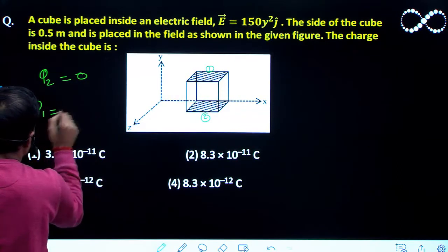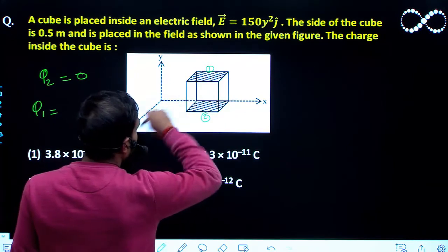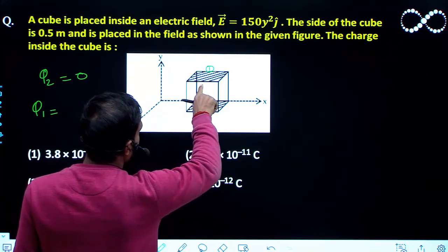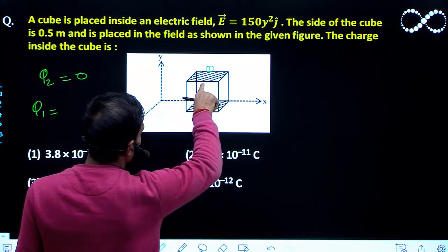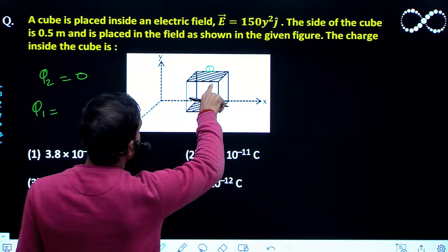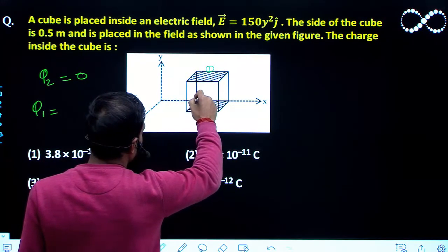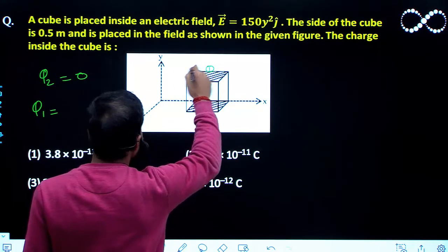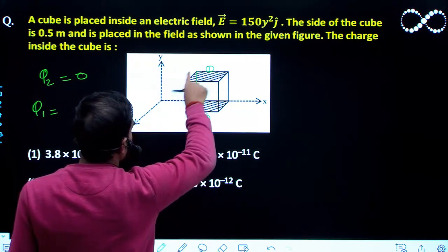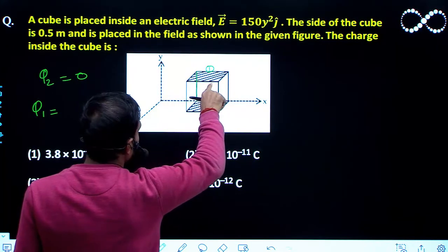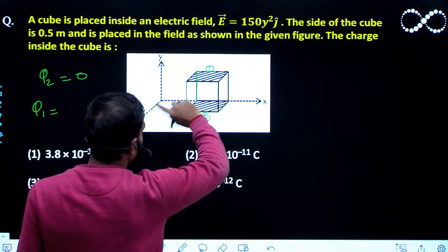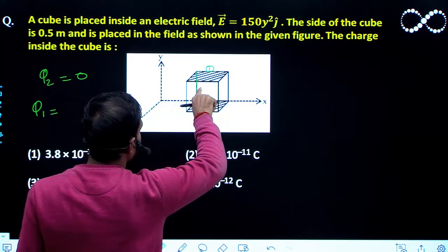Now I talk about flux surface 1. Due to the flux, if you will see here, all the points of the surface 1 are having the y coordinate as 0.5 because this side of the cube, this length from here to here is 0.5 meter. So all the points of the surface 1 are having the y coordinate as 0.5.